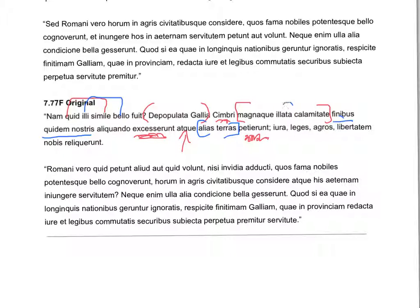Notice elata — it's got that root from fero, ferre, tuli, latus. They also peti errant — they sought other lands. Notice Caesar is using some syncope there; it should actually be petiverunt, but he wants to look fancy. Alias teras is a direct object of peti errant, so they sought other lands.